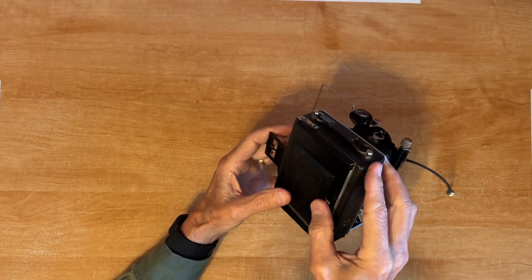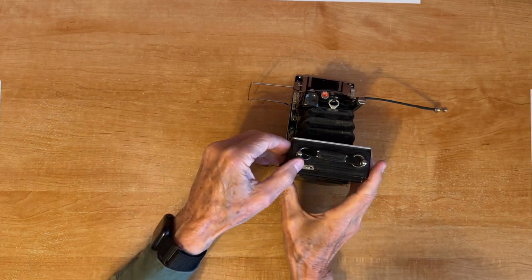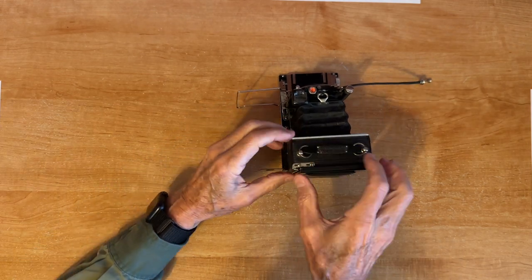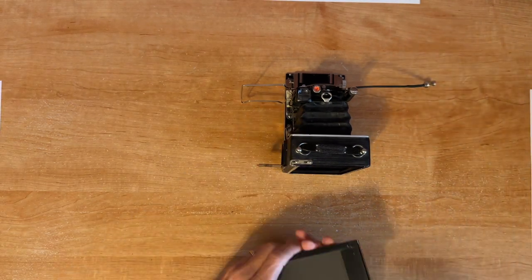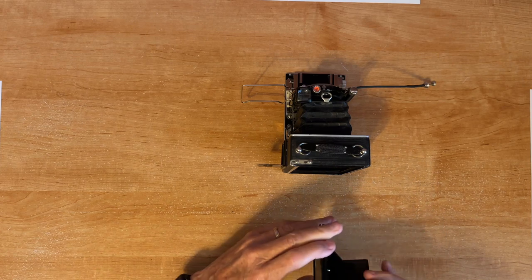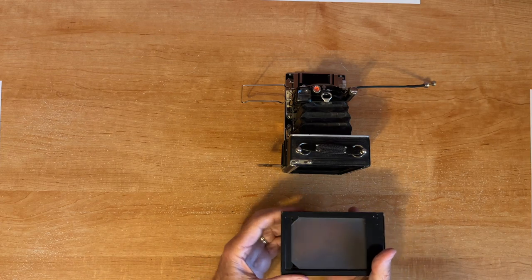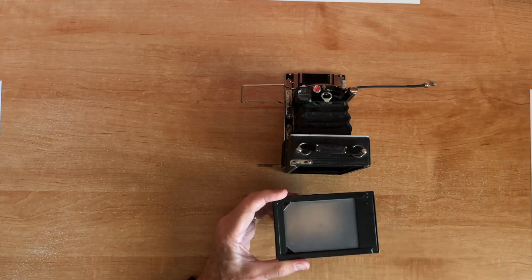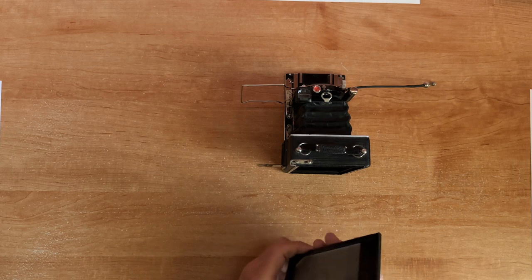So it folds up nicely like that. And after you've focused then you remove the focusing screen by pushing the lever and then everything just slides up like that. So that's the ground glass. I'll open it so here you can see through it. Clever little design.